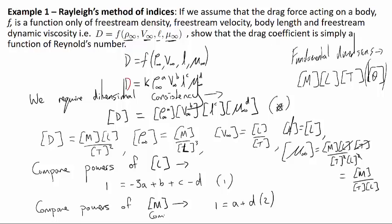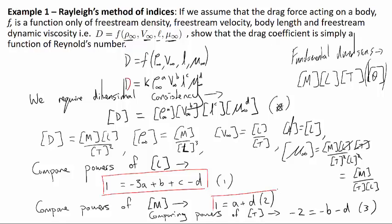And I'll squeeze the last one to the bottom so we can see them all on the same slide. So comparing powers of T, using exactly the same method, we get -2 on the left-hand side because of the 1/T^2. This equals: there's no T in the rho infinity, there's a 1/T in the V infinity which is raised to the power B, so we get -B, nothing in the L, and then a -D here. So we've got three equations.